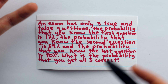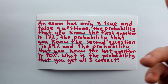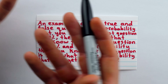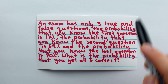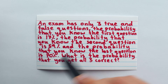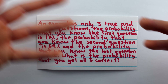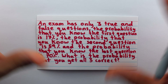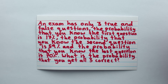They're certainly more likely to know the other answers than someone who didn't know the first question. The fact that the question doesn't address independence suggests that the reader should just assume that the probabilities of the student answering the questions correctly are all independent.